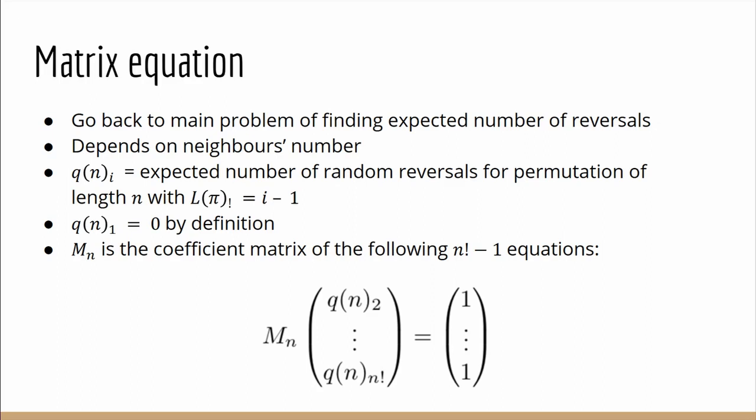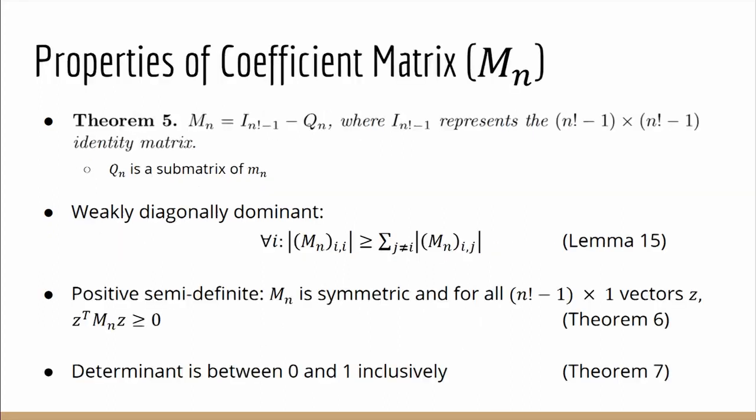But that's not really helpful for finding M_n. So in Theorem 5 we prove that we can find capital M_n using the work we've done before where Q_n is the bottom right sub-matrix of small m_n. We'll also prove some properties of capital M_n such as that it's weakly diagonally dominant, positive semi-definite, and its determinant is between 0 and 1 inclusively.